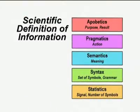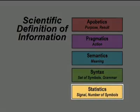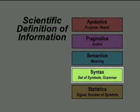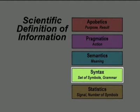Here we see the five levels. The statistic level is if we, for example, would count all the letters of a book — that's what we do in statistics. And if we look at the book, we see there are many sentences and they are written in a special syntax. That is the second level of information.